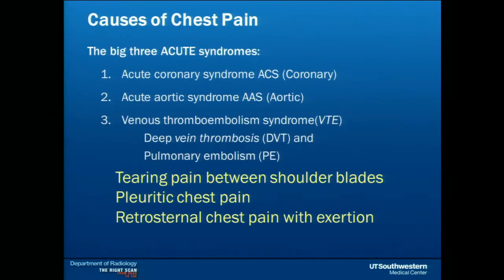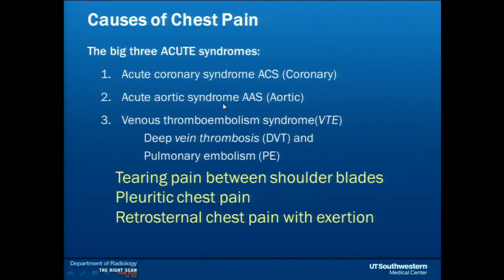So if we talk about chest pain, we have to consider the many different flavors of chest pain, and they would result in very different clinical approaches or imaging. I'll start with the big three acute chest pain syndromes: the acute coronary syndrome, which would be an acute MI, non-ST elevation MI, or unstable angina pectoris with retrosternal chest pain; the acute aortic syndrome, which is aortic dissection, intramural hematoma, or penetrating atherosclerotic ulcer; and the venous thromboembolism syndrome, which is PE and/or deep venous thrombosis.